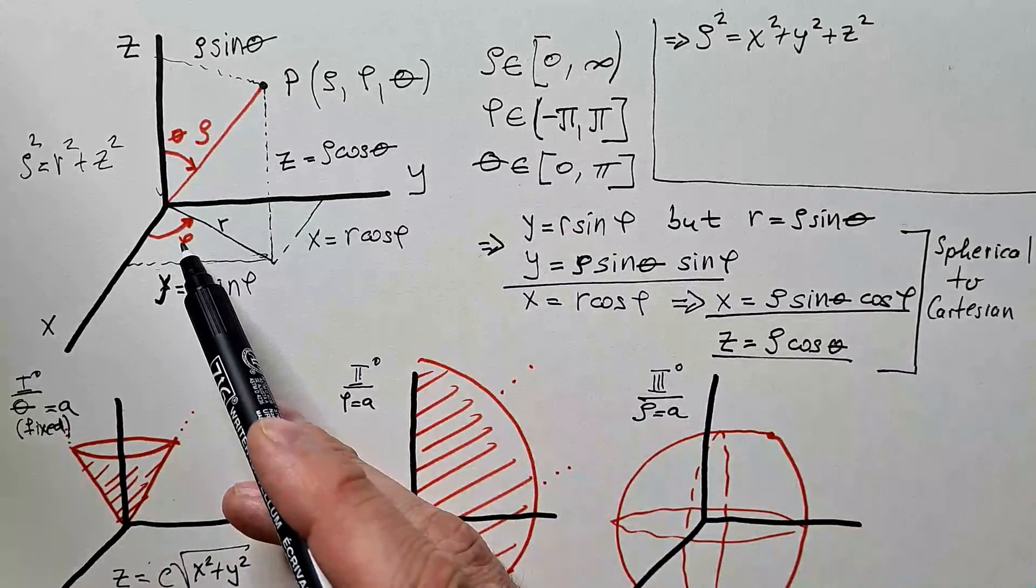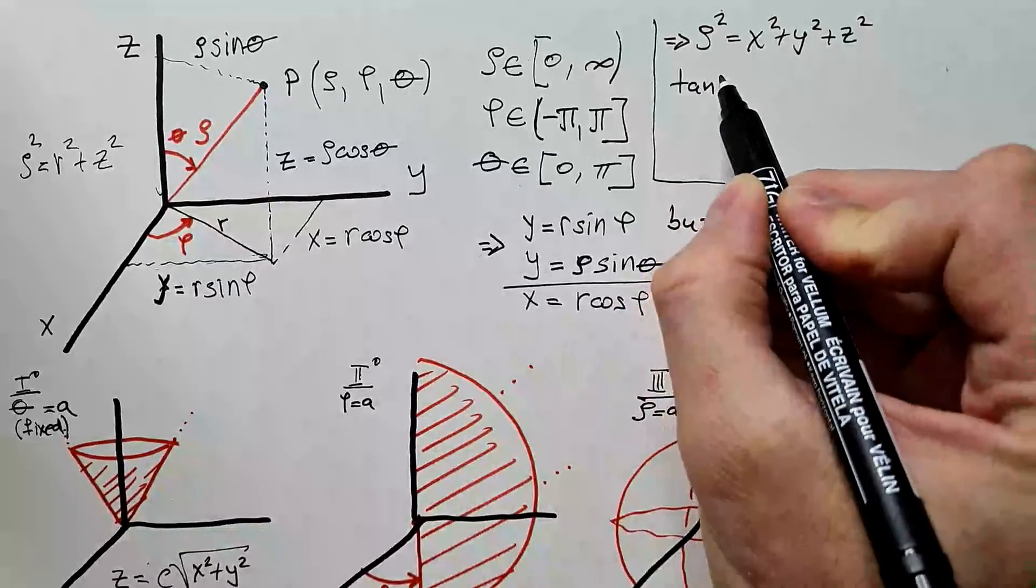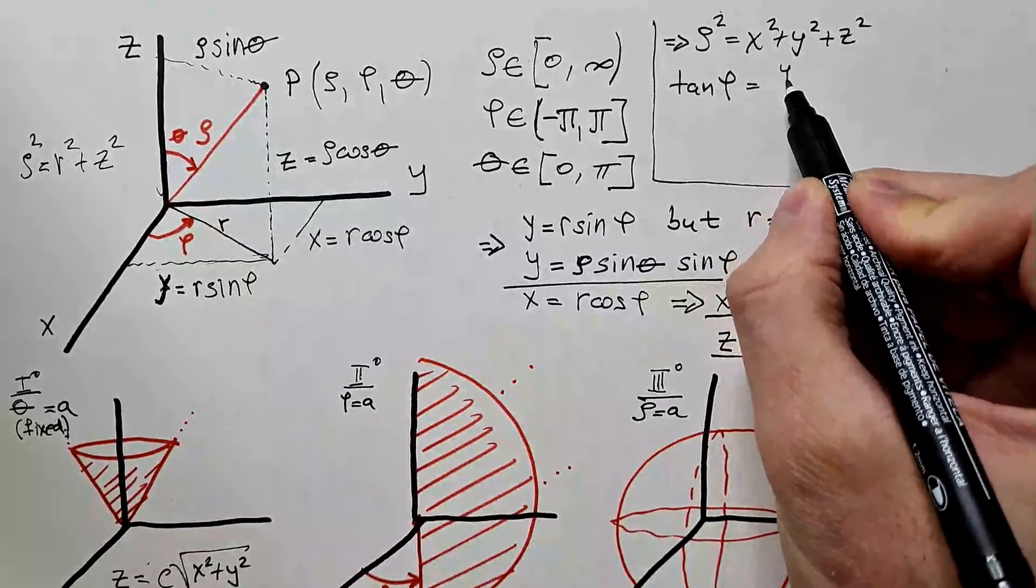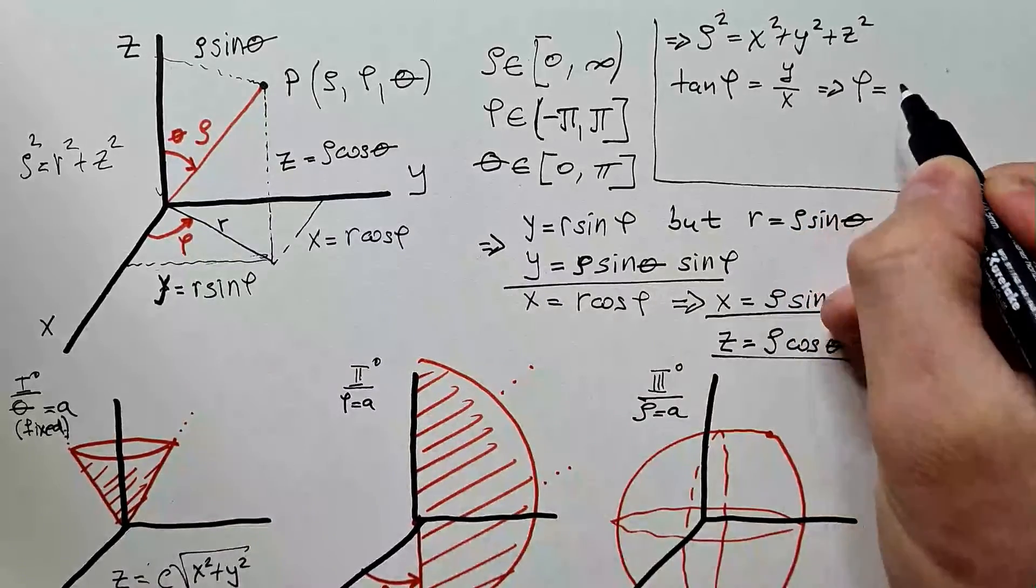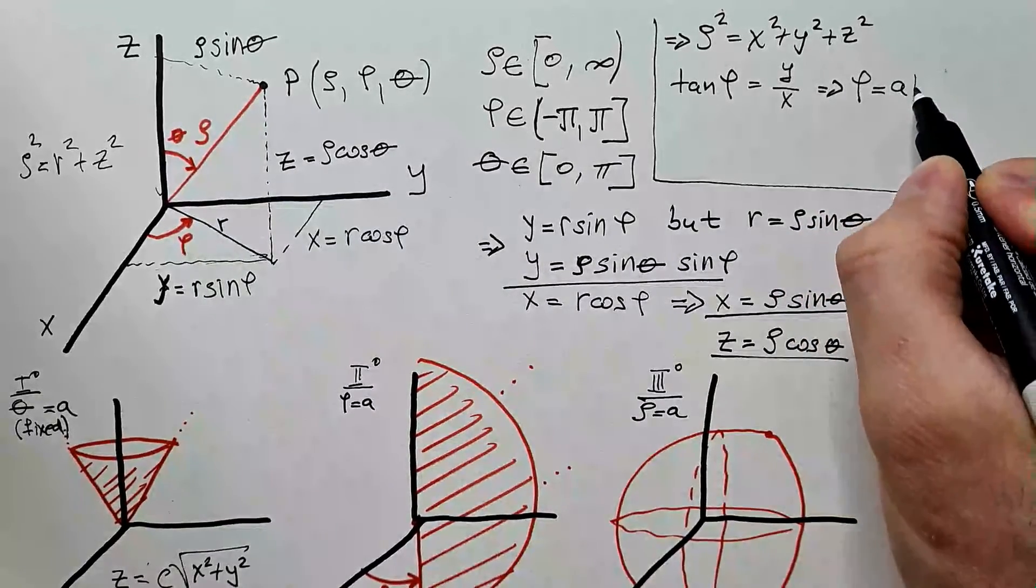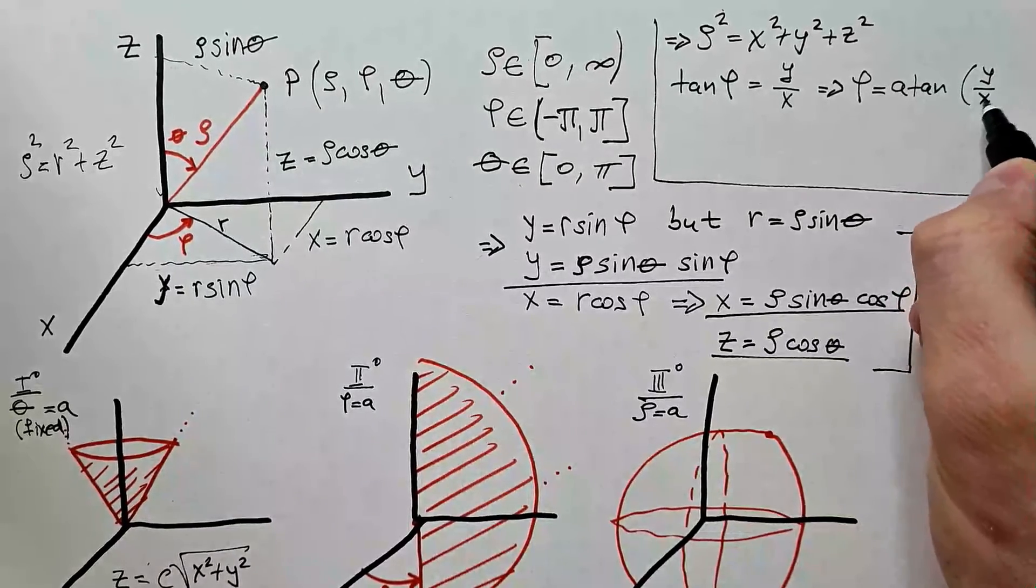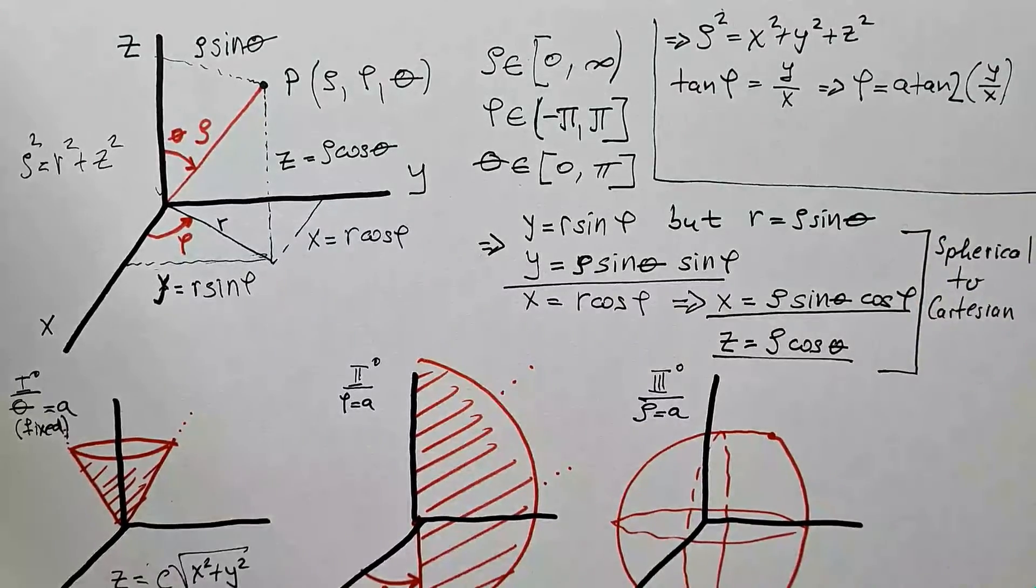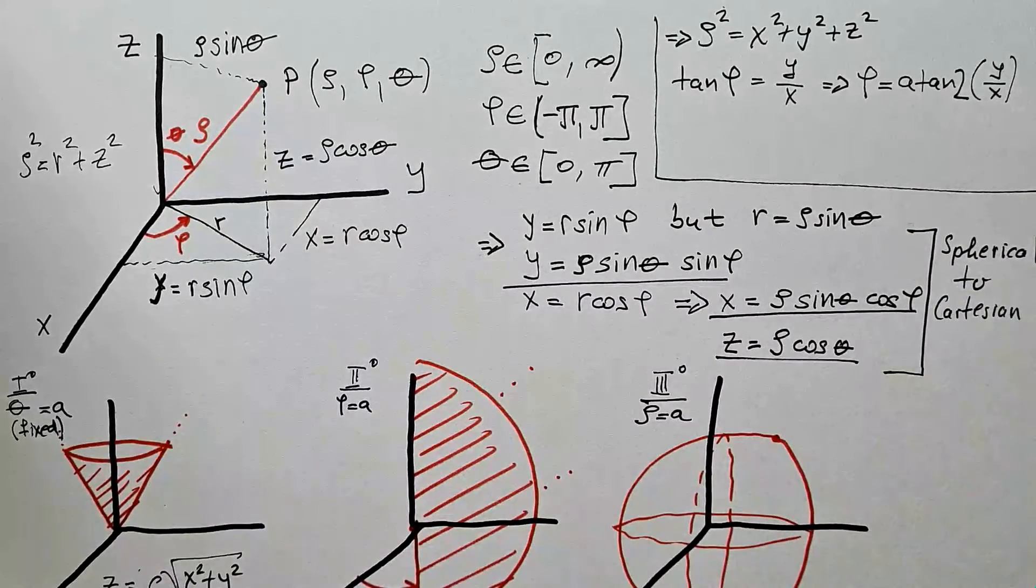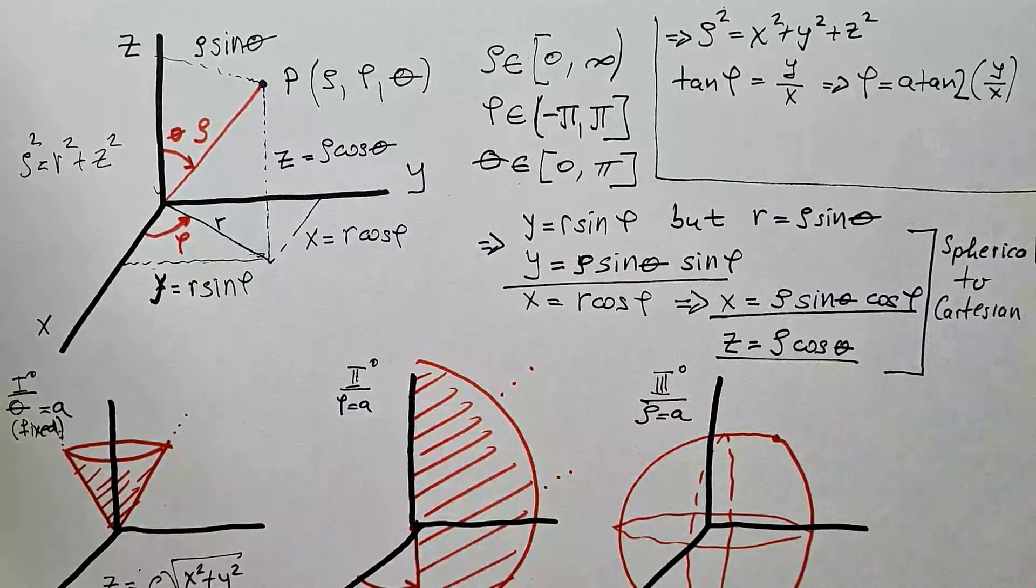Angle phi, we see from this figure that tangent of phi is y over x, which means that angle phi is arctangent of y over x. But as always, in these cases, we have to use arctangent 2. And I have entire video devoted to the difference between regular arctangent and arctangent 2.